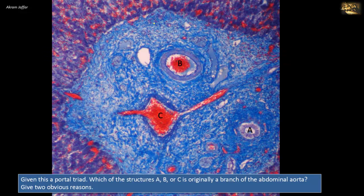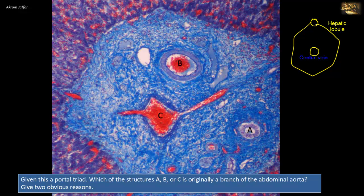Given this is a portal triad, which of the structures A, B, or C is originally a branch of the abdominal aorta? Give two obvious reasons. Portal tracts are positioned at the angles of the hexagon of the hepatic lobule. The central vein is at the center, and the portal tracts are located at the angles. A portal tract contains three main structures, hence the name portal triad.